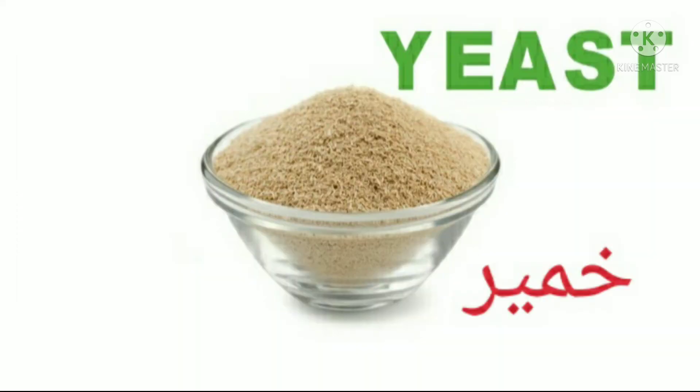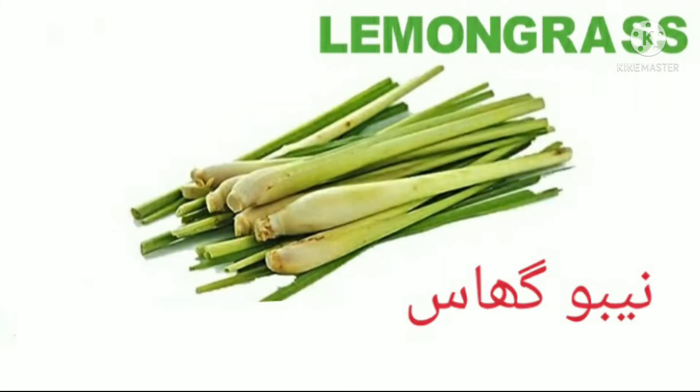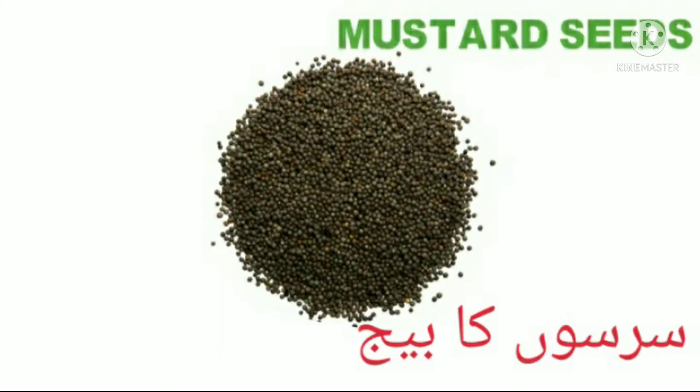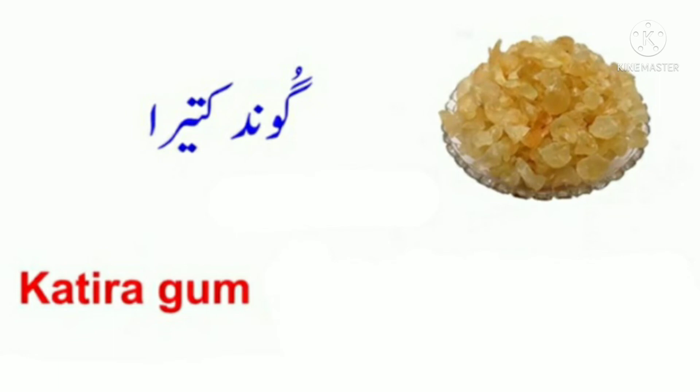Number forty nine: raisin, kishmish, mewa. Number fifty: citric acid, tartary. Number fifty one: yeast, khamir. Number fifty two: lemon grass, neemu ghas. Number fifty three: mustard seeds, sarso ka beej.